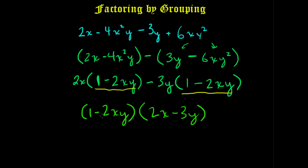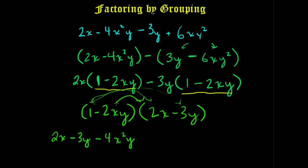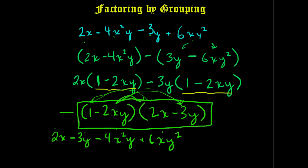Let's distribute back through to check our answer. Distributing the 1 first gives 2X. Then distributing the minus 2XY: minus 2XY times 2X gives minus 4X²Y, and minus 2XY times minus 3Y gives positive 6XY². So we have 2X, minus 4X²Y, minus 3Y, and positive 6XY² — which matches the original expression. So (1 minus 2XY)(2X minus 3Y) is the correct factored answer.